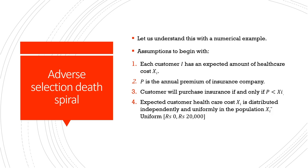Let us understand this with a numerical example. Assume each customer i has an expected healthcare cost X_i and P is the annual premium. The customer will purchase insurance if and only if the annual premium is less than the amount of healthcare costs. The expected customer healthcare cost X_i is uniformly distributed in a population ranging from rupees 0 to rupees 20,000. Suppose the insurance company offers a contract with a premium of rupees 10,000, reflecting an average health status.